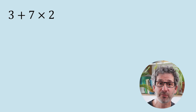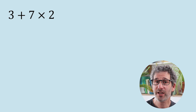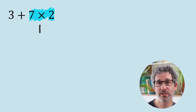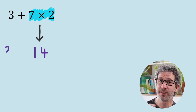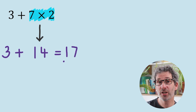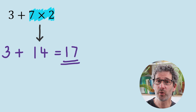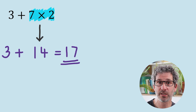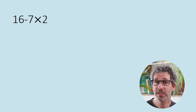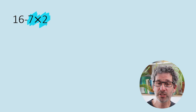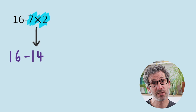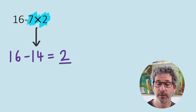So let's say we've got something like 3 add 7 times 2. Here, we actually do the multiplication first — by which I mean we do the 7 times 2, which gives 14. Then we add that onto the 3 to give 17. So we didn't just work from left to right; multiplication, we do that before we do the addition. Another similar example: 16 minus 7 times 2. We do the multiplication first — 7 times 2 — so it becomes 16 minus 14, which is 2.